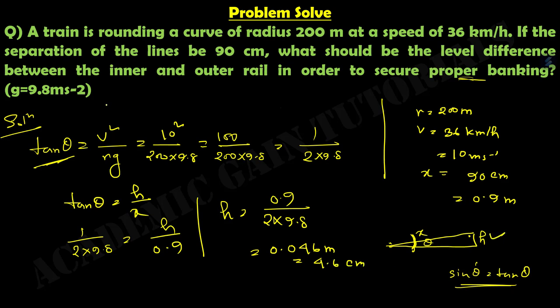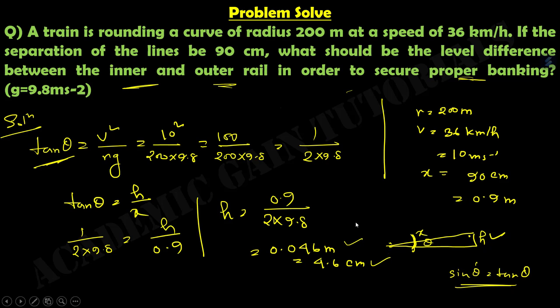So the difference between the inner and outer line in order to secure proper banking is 0.046 meter or 4.6 centimeter. That is the height difference between the inner part and the outer part.